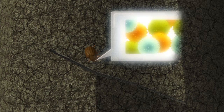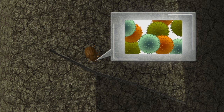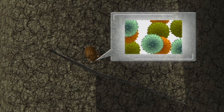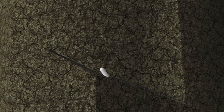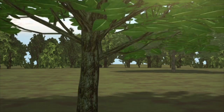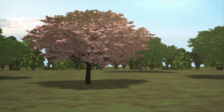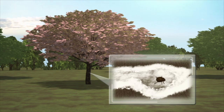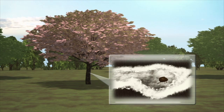Laurel wilt is vectored by the ambrosia beetle, an invasive species from Asia. The fungus is introduced when the beetle bores into a tree. The fungus grows inside the tree and the beetle feeds on it. The fungus spreads in the tree's vascular system, causing it to wilt and die.